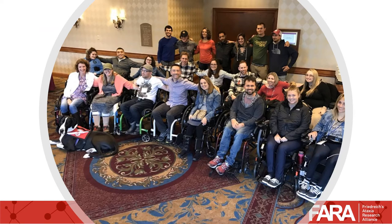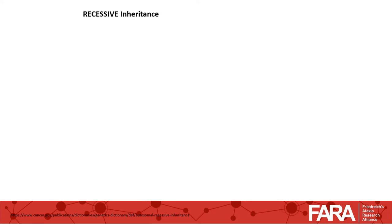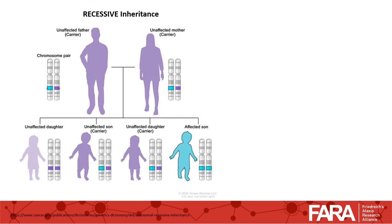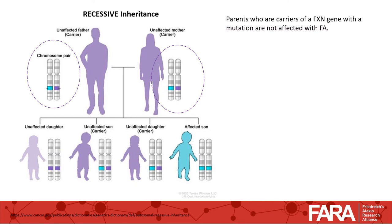So all this information brings us to the inheritance pattern for Friedreich's Ataxia. The inheritance pattern for FA is recessive. Let's look more closely at what recessive inheritance means for FA. Dad's chromosomes contain a copy of the frataxin gene without a mutation, represented by the purple color, and a copy of the frataxin gene containing a mutation that causes Friedreich's Ataxia, represented by the teal color. Mom's chromosomes contain the same frataxin gene copies as Dad. Neither mom nor dad are affected with Friedreich's Ataxia, as is typical for genetic conditions with recessive inheritance. The parents are characterized as carriers for FA.